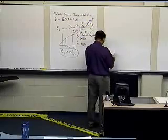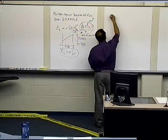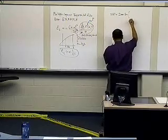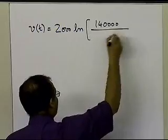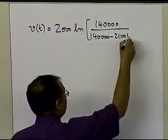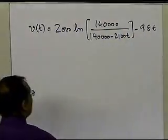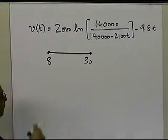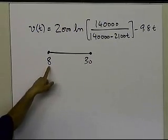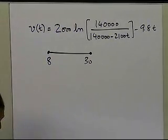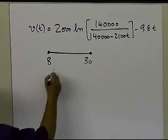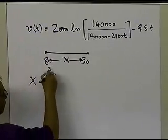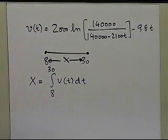Consider this real-life example: the upward velocity of a rocket is given by v(t) = 2000 log(140000 / (140000 minus 2100t)) minus 9.8t. The problem is to find the distance covered from 8 to 30 seconds. The distance x is simply the integral from 8 to 30 of v(t) dt — the area under the velocity profile curve from 8 to 30 seconds.